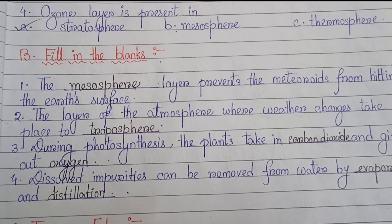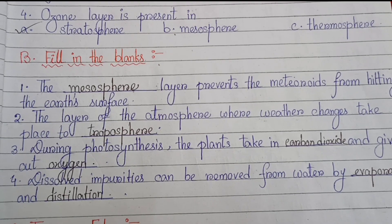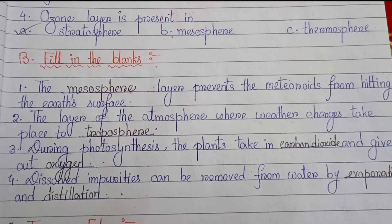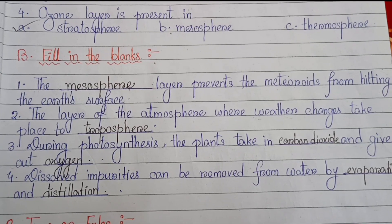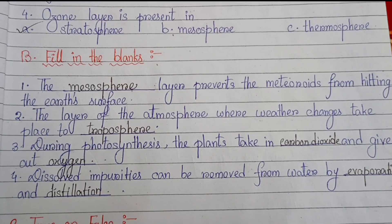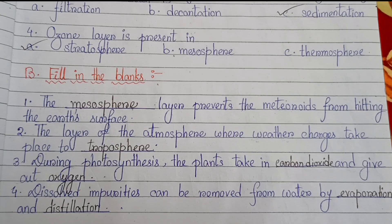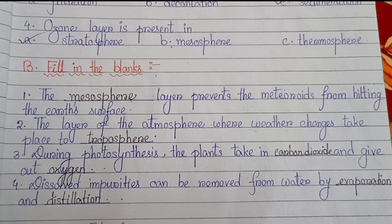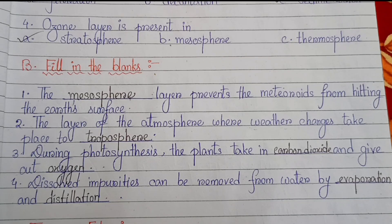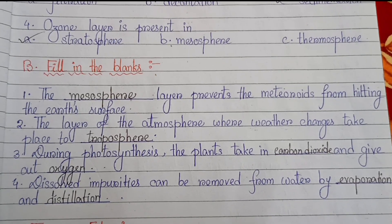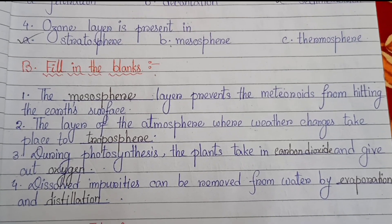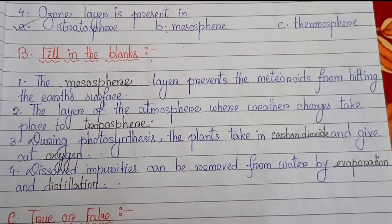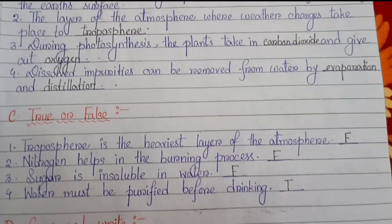Next, Number B: Fill in the blanks. Number 1: the mesosphere layer prevents the meteorites from hitting the earth's surface. Number 2: the layer of the atmosphere where weather changes take place is the troposphere. Number 3: during photosynthesis, plants take in carbon dioxide and give out oxygen.